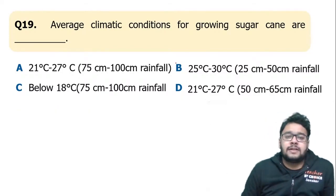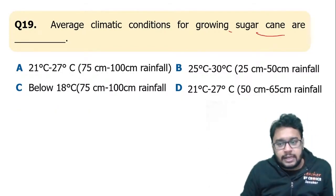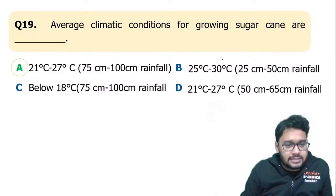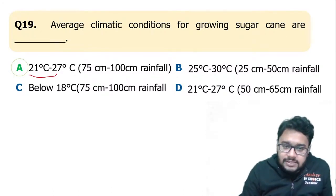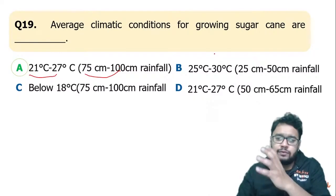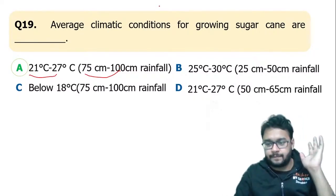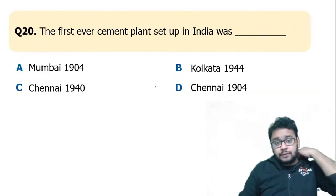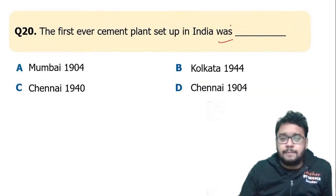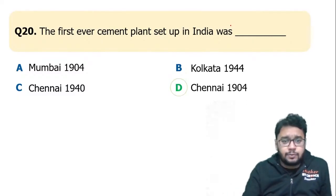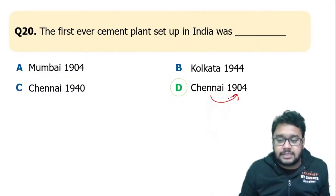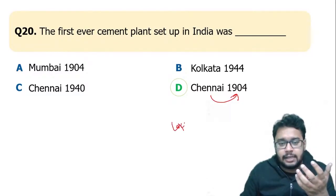The average climatic conditions for growing sugarcane: sugarcane is a tropical crop. Its growth requires a temperature between 21 to 27 degree Celsius and rainfall of 75 to 150 cm — option A is correct. The first cement plant set up in India was in Chennai in 1904, and the first cement city of India is known as Lakheri in Rajasthan.